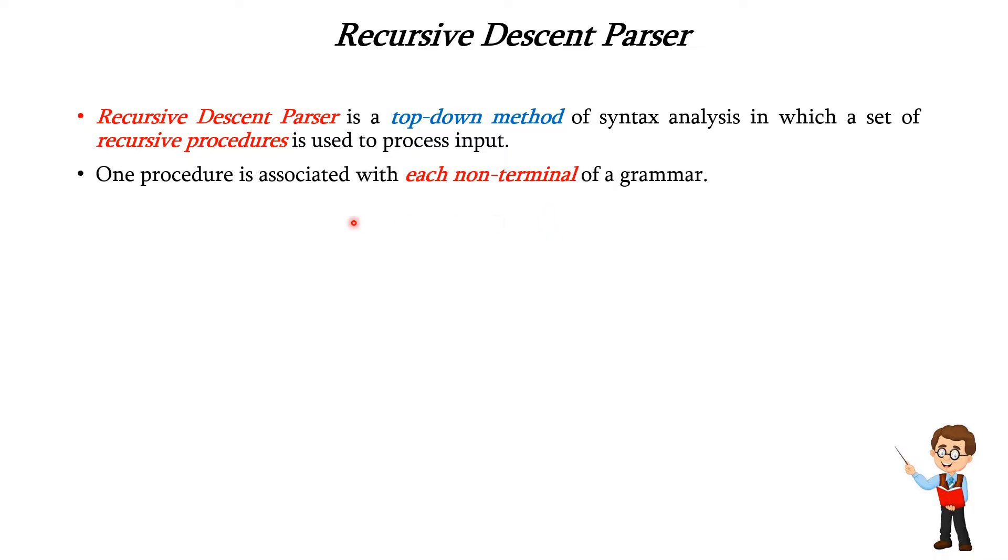One procedure is associated with each non-terminal of your grammar. During the analysis of an input string, the sequence of procedure calls will be made, which implicitly defines a parse tree for the input.